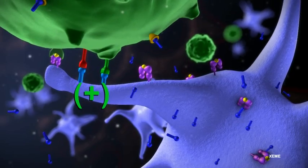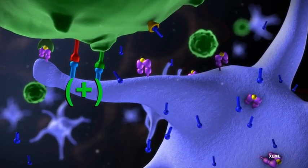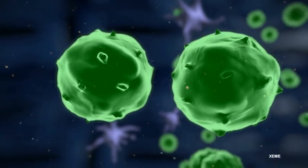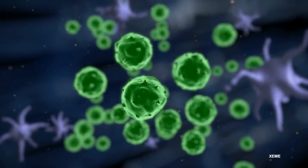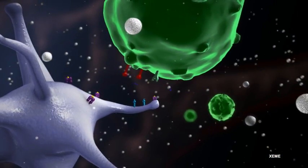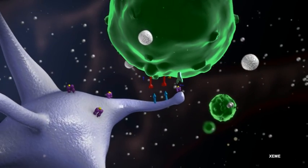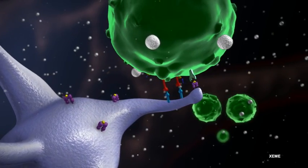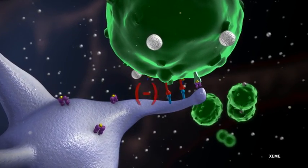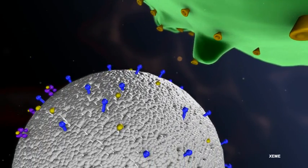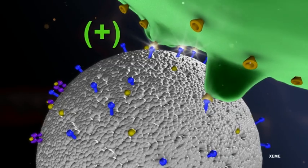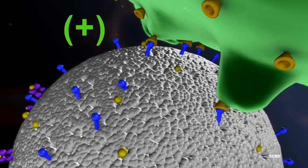These activated killer T cells multiply under the action of IL-2 that comes naturally from dendritic cells and helper T cells, but also from agregons. The natural supply of IL-2 is reduced by negative regulatory signals that protect cancer cells, but the multiplication of killer T cells and natural killer cells continues under the effect of IL-2 from agregons. The synthetic agregons do not respond to negative signals.